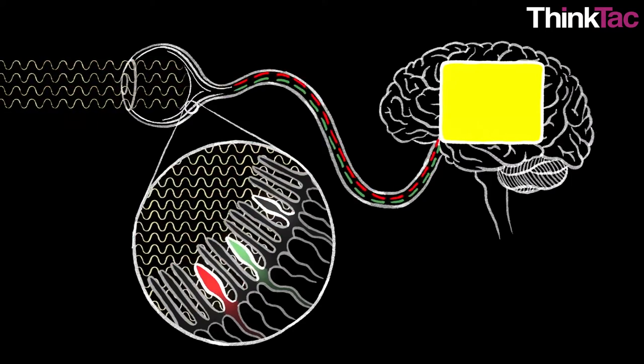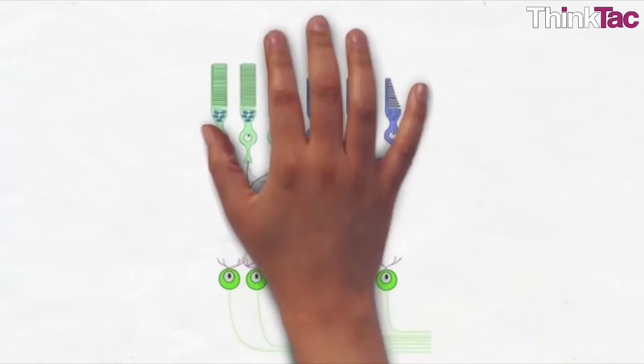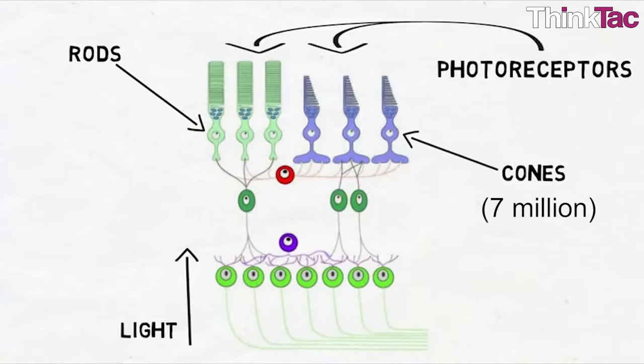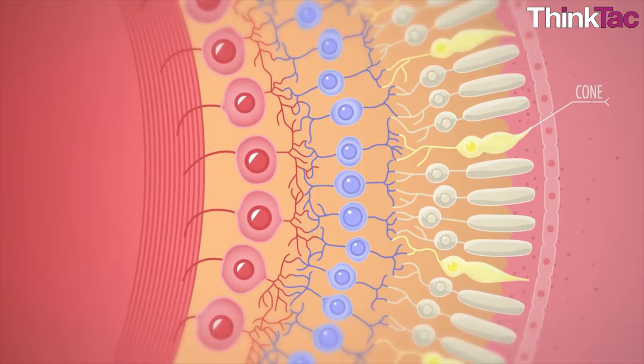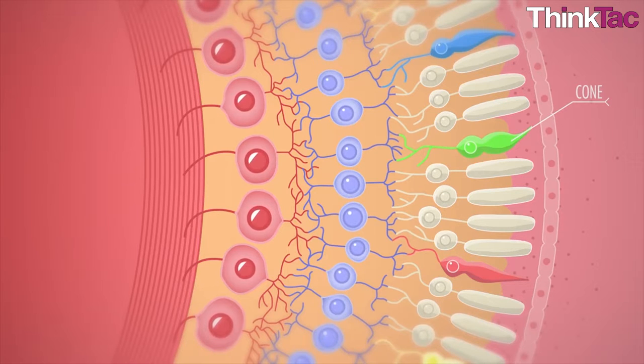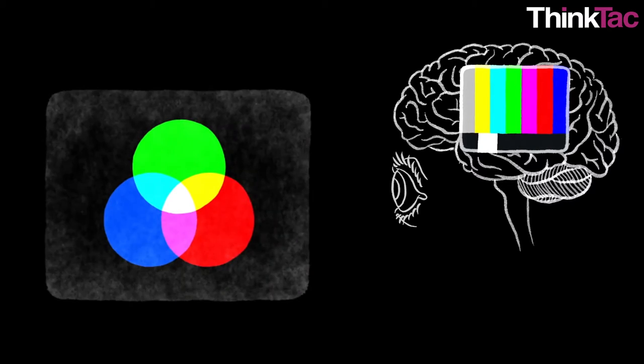So how do photoreceptor cells work? Our retinas contain two types of photoreceptors: cones and rods. There are around 7 million cones and 75 to 150 million rods in one human eye. What do these do and why are there so many? Cone cells help us see color in well-lit conditions. As Helmholtz discovered, they are of three types, and whenever the particular frequency of light falls on the cones, only the particular cones generate impulses.